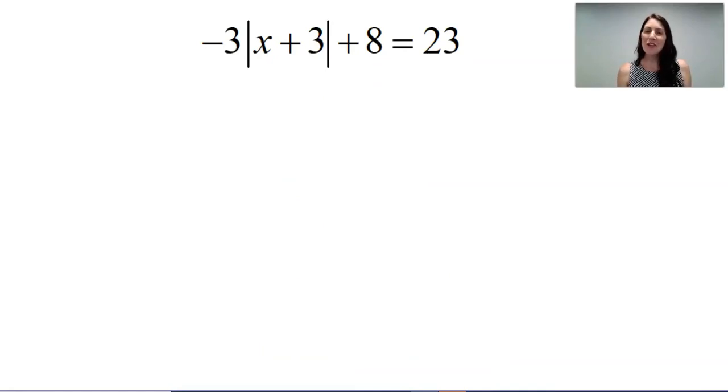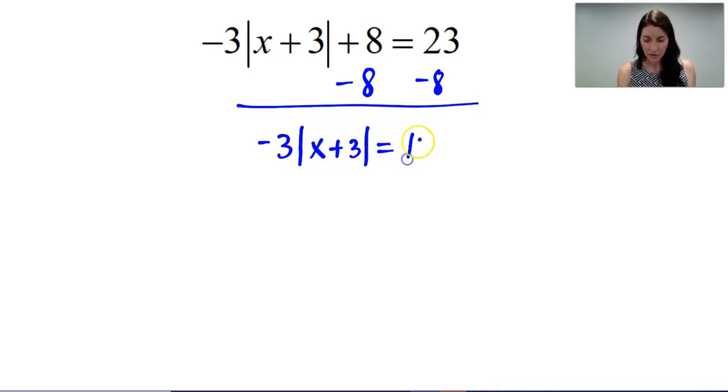I have one last equation for you and something interesting is going to happen on this one. Once again, we cannot distribute in the negative 3. So like I did on the last equation, I'm going to subtract that constant over first. Now I need to isolate the absolute value. So I'll divide both sides by negative 3. And I have the absolute value of x plus 3 equals negative 5.